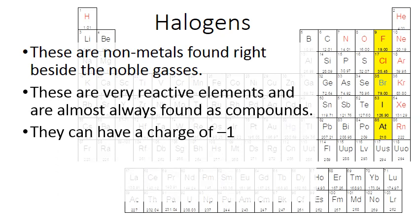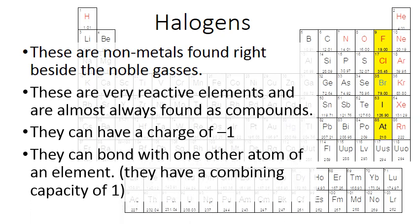They have a charge of negative one. So this whole column will form charges of negative one when they become ions. And they can bond with one other atom of an element. So they have a combining capacity of one. So that basically means that they can, in a chemical reaction, they can link up with one other element at a time.